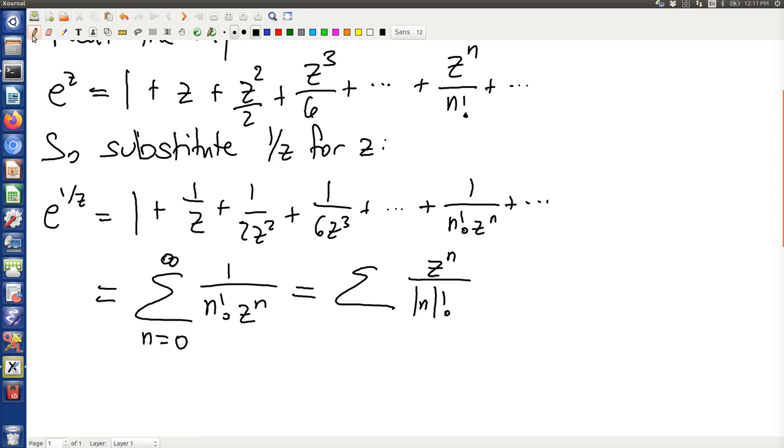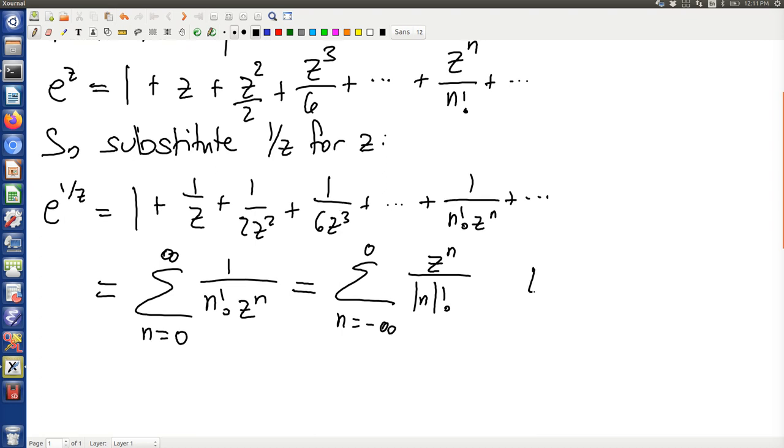But now all of our exponents, except for the first one, they're non-positive. So the last exponent is 0, and we go from minus infinity to 0. So this is evidently a Laurent series.